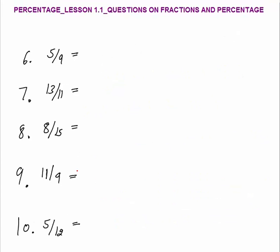Question 6: 5 by 9. I know 1/9 is 11 and 1/9%. So 5/9 will be 5 times that. 5 times 11 and 1/9% gives a final answer of 55 and 5/9%.